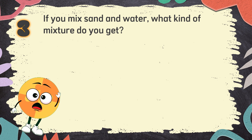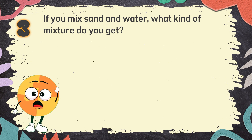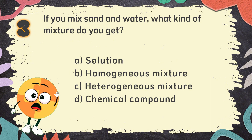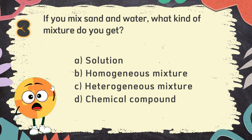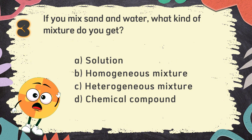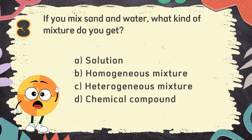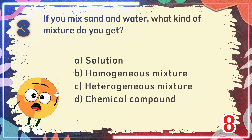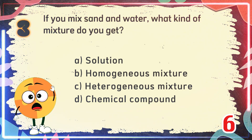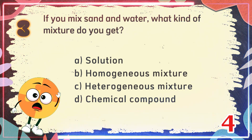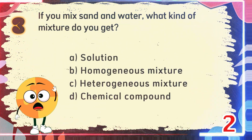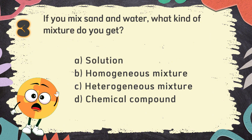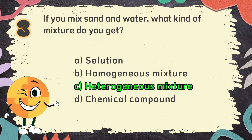Number 3. If you mix sand and water, what kind of mixture do you get? The choices are: A. Solution. B. Homogeneous mixture. C. Heterogeneous mixture. D. Chemical compound. The correct answer is C: Heterogeneous mixture.